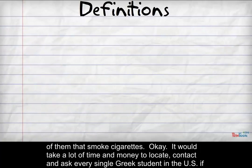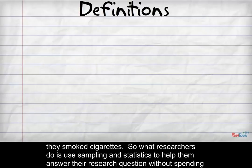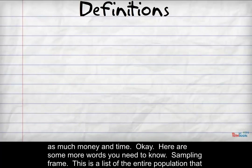It would take a lot of time and money to locate, contact, and ask every single Greek student in the U.S. if they smoke cigarettes. So, what researchers do is use sampling and statistics to help them answer their research question without spending as much money and time.